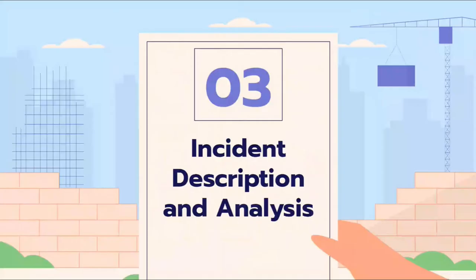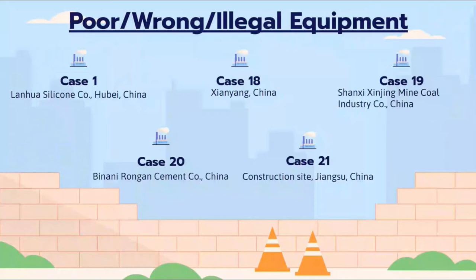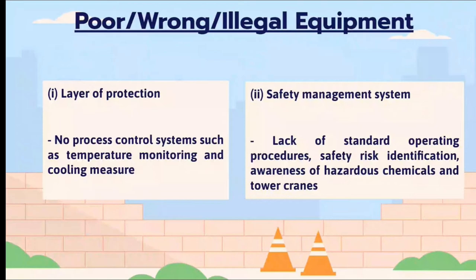Under poor, wrong, or illegal equipment: Case 1 resulted in an explosion; Case 18 resulted in structural collapse; Case 19 resulted in mechanical failure; Case 20 resulted in structural failure; and Case 21 resulted in mechanical failure — specifically a crane falling down. In terms of layer of protection, there was no process control system such as temperature monitoring or cooling measures. The safety management system lacked standard operating procedures, safety risk identification, and awareness of hazardous chemicals and power cranes.